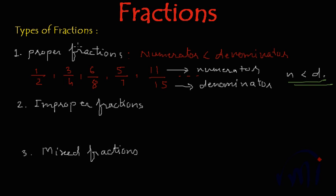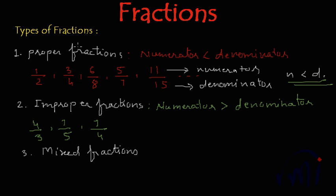We also have improper fractions. What are improper fractions? Improper fractions are where the numerator is more than the denominator. For example, 4/3, 7/5, 7/4, or 9/6. These kinds of fractions where numerator is more than denominator are called improper fractions. There are some places where we use these kinds of fractions.